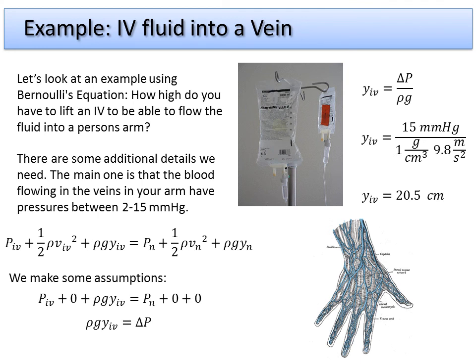We made some approximations — we said the fluid flow velocities were negligible, essentially zero. If we wanted to push in the fluid at a much higher rate where velocity is noticeable, or if the level drops significantly because we're pushing in fluid quickly, we would have to add in all of those velocity and height terms. It's not that hard to do — just be careful to go through all of your initial and final conditions and make sure you've accounted for everything.